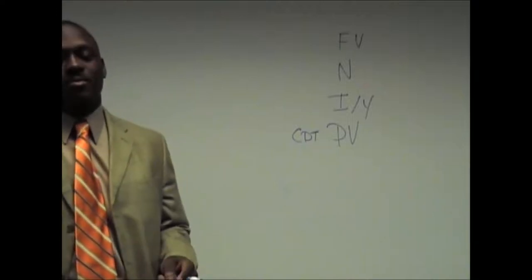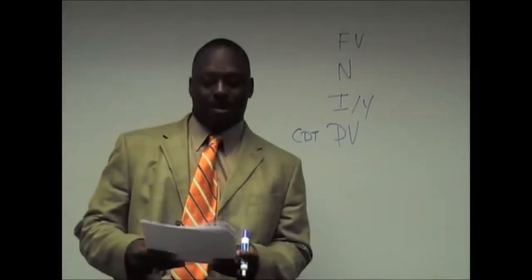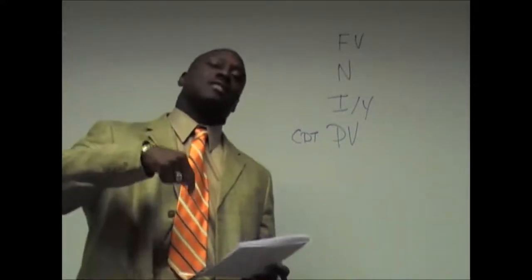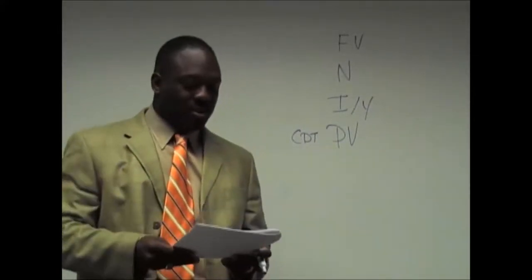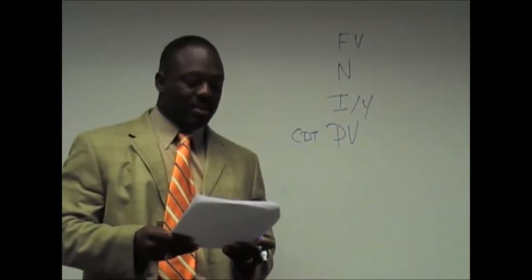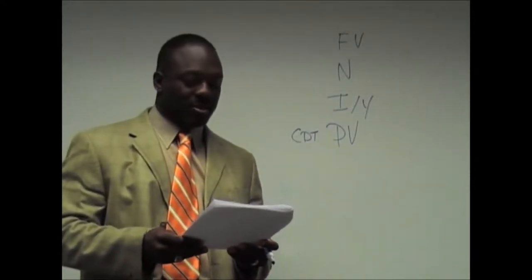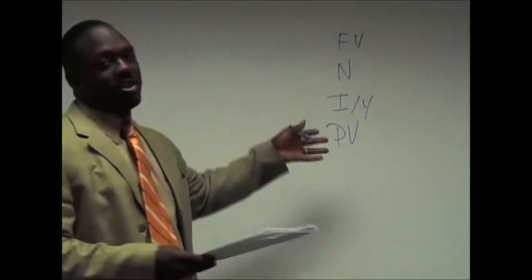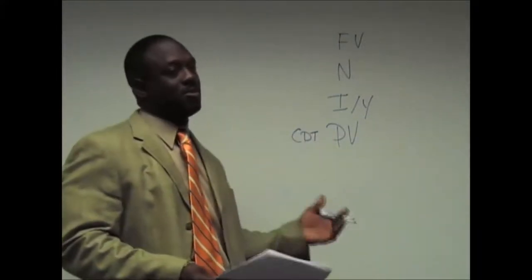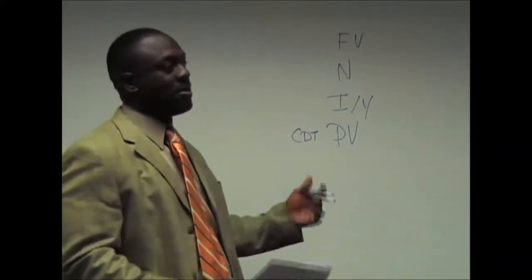The next problem that we are going to compute is a present value problem. Present value is called discounted because we look at a future amount discounted to today's terms. So we are going to look at the present value of $400 to be received at the end of 10 years when the discount rate is 5%.